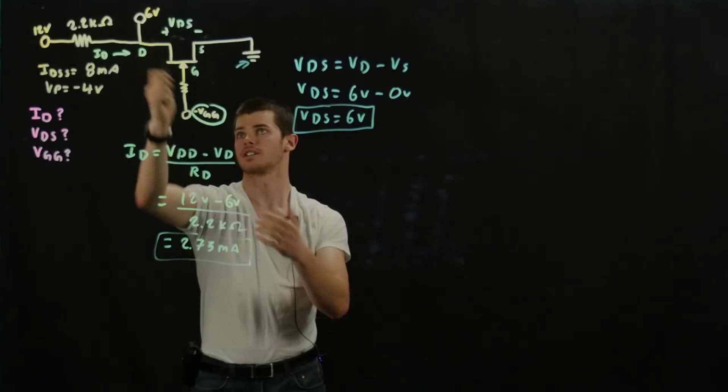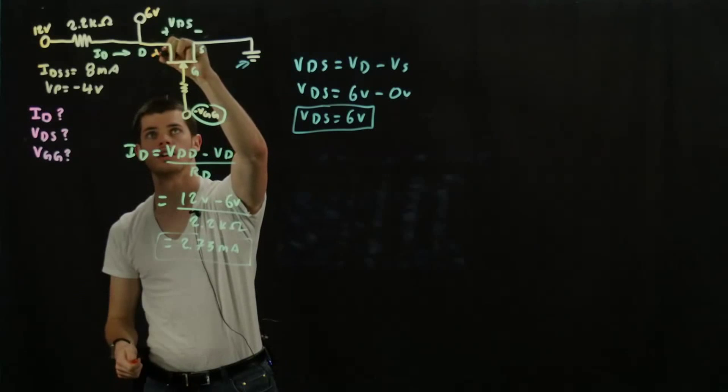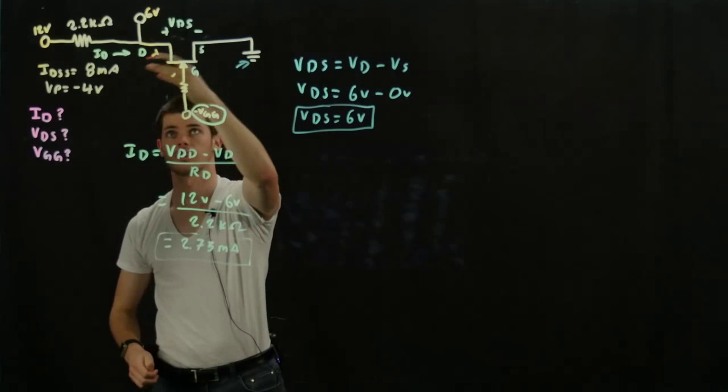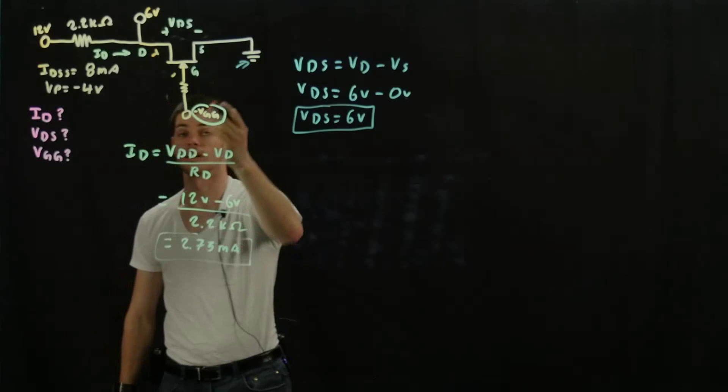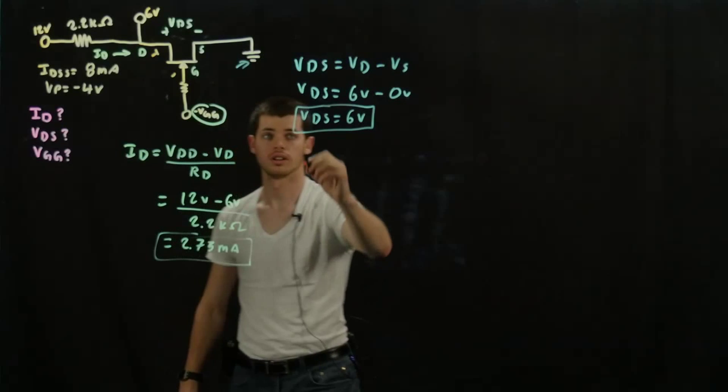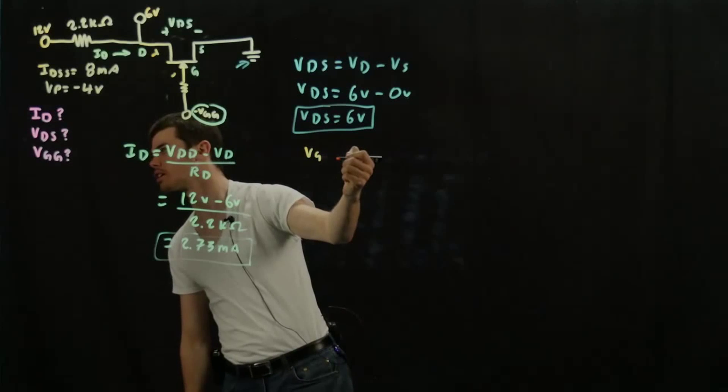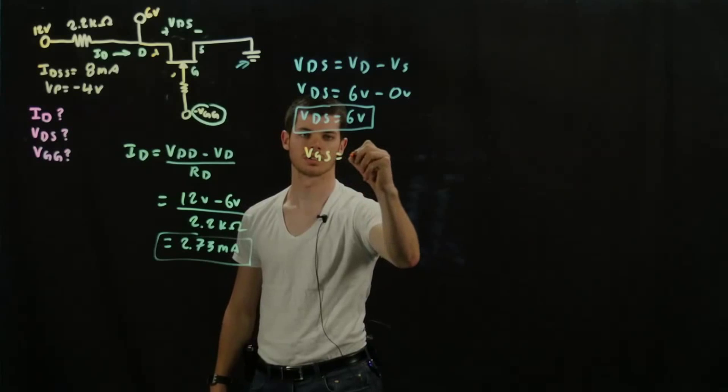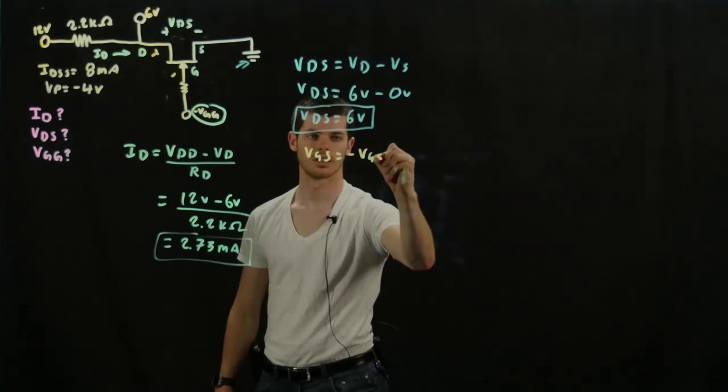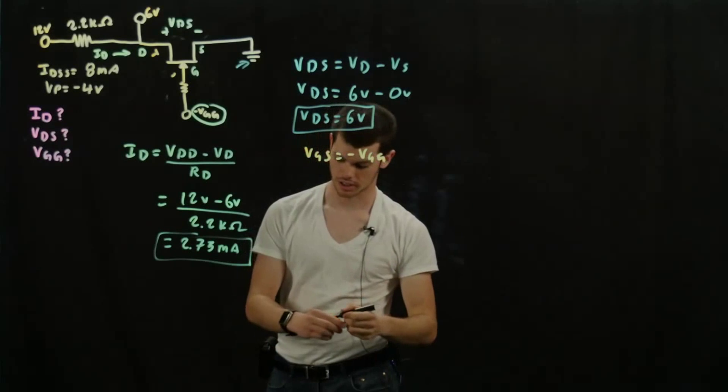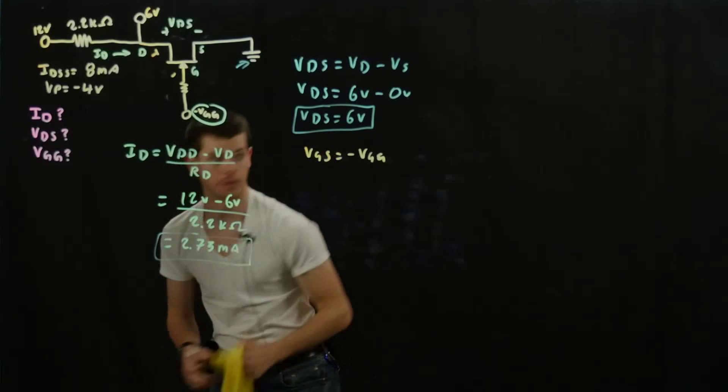because VGS is essentially the current from here to here. And so they're essentially the same, considering it's grounded, relative to ground, that is. So we're going to write that down, VGS is equal to negative VGG.